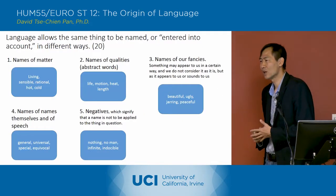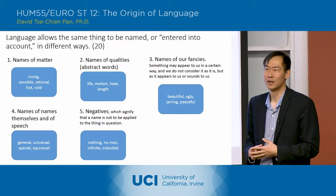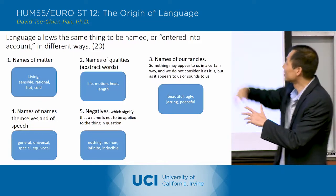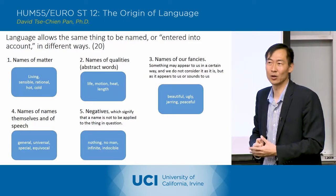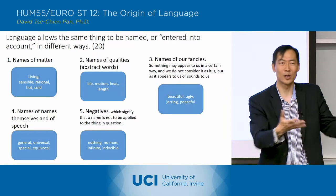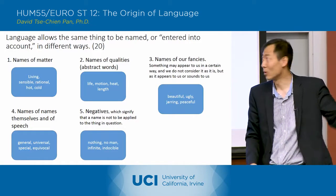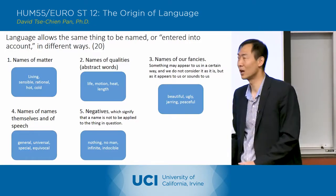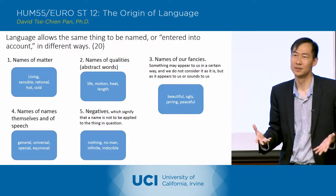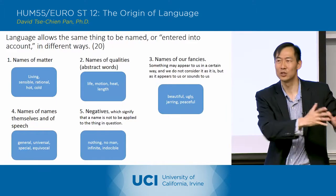He then goes on to talk about the different ways in which we categorize reality, because he gives us five categories of names. The first is names of matter — basically anything going on in the world that you give a name to or describe. The wall can be hot or cold, hard or soft, tall or short. Those are all descriptions of matter — one way to reduce a multiplicity of impressions into one thing.